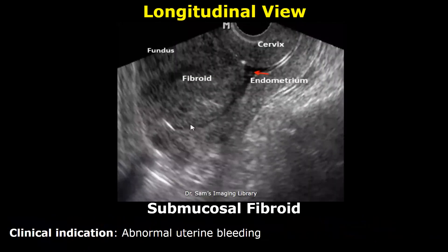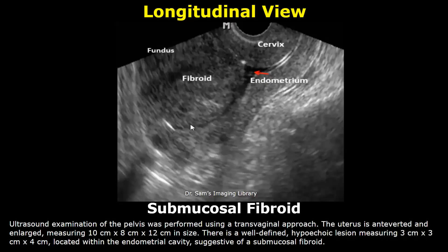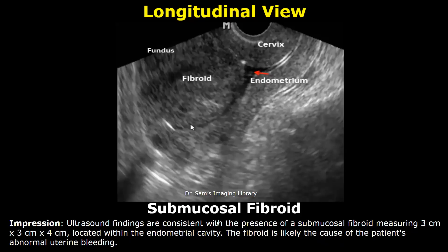Our next case is submucosal fibroid. The clinical indication is abnormal uterine bleeding. After imaging a submucosal fibroid, in the findings write: 'There is a well-defined hypoechoic lesion located within the endometrial cavity, suggestive of submucosal fibroid.' In the impression, write: 'Ultrasound findings are consistent with the presence of a submucosal fibroid located within the endometrial cavity,' also mentioning its size. The fibroid is likely the cause of the patient's abnormal uterine bleeding.